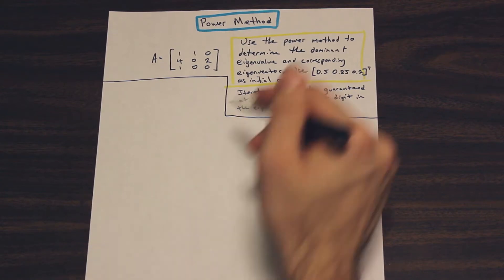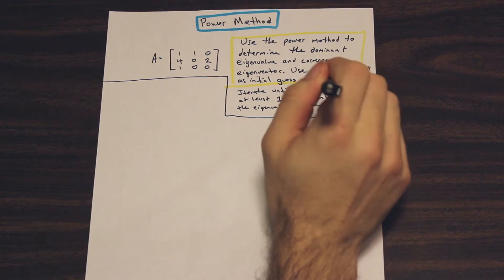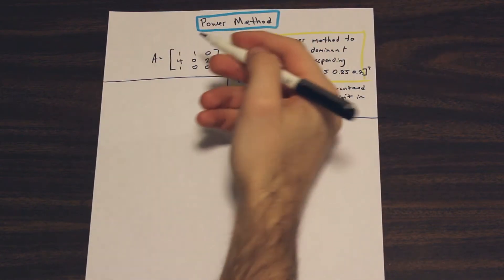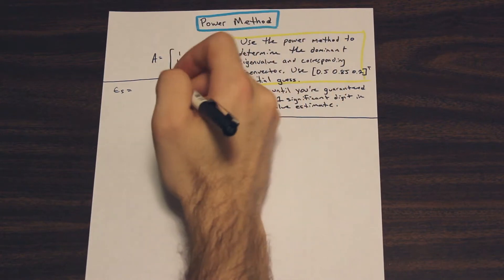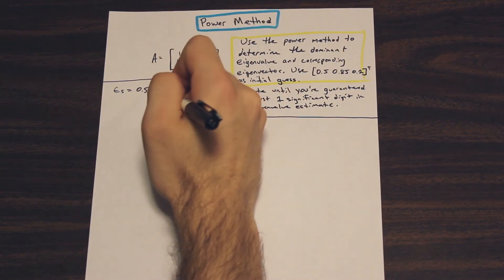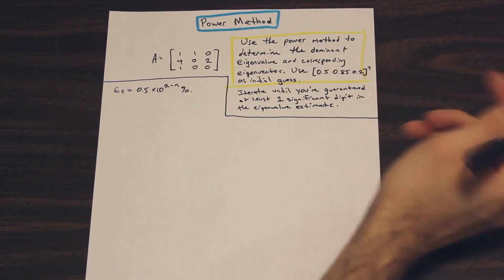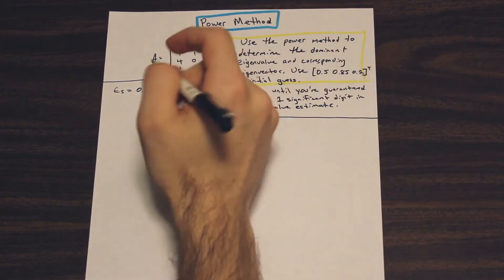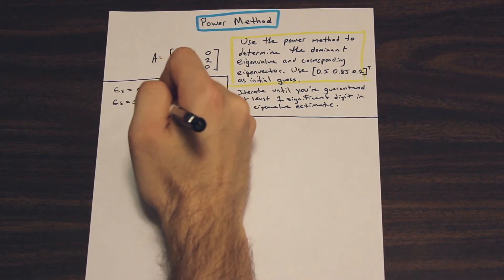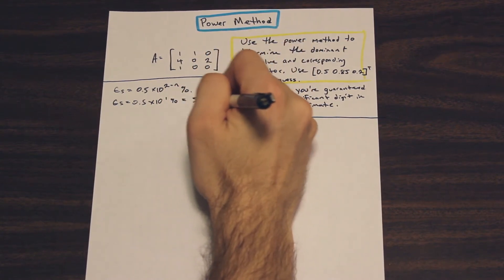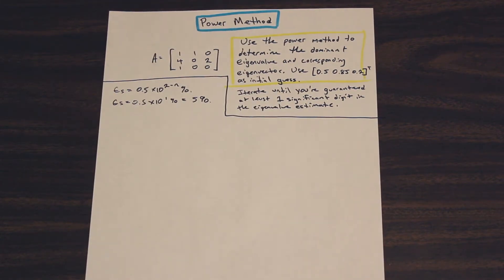First step is we're given this stopping criteria here. So we're going to need to evaluate the stopping percentage error that we're going to require. So if you remember, the formula for that, for epsilon s, is going to be 0.5 times 10 to the 2 minus n percent, where n represents the number of significant digits that we want to have of accuracy. So in this case, it's 1. So this is going to be epsilon s equals 0.5 times 10 to the 2 minus 1, which is 1 percent, and that is equal to 5 percent.